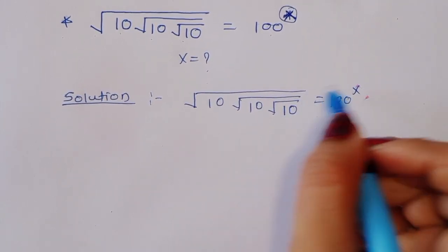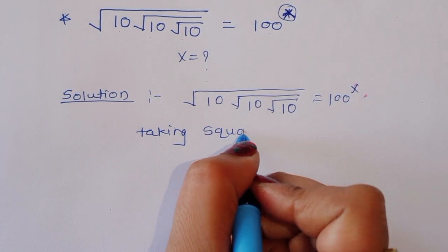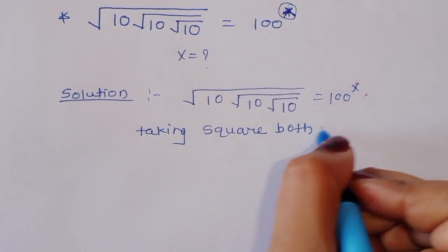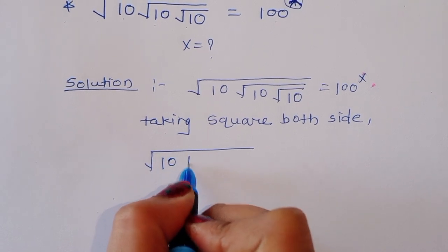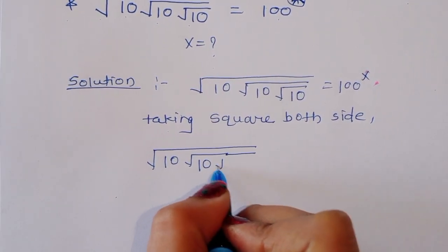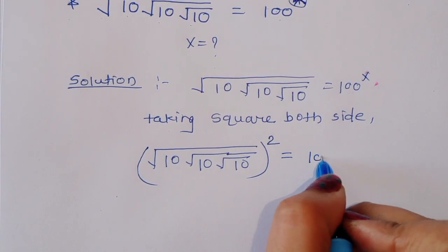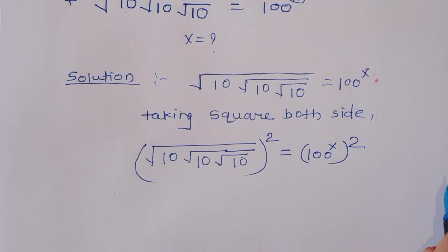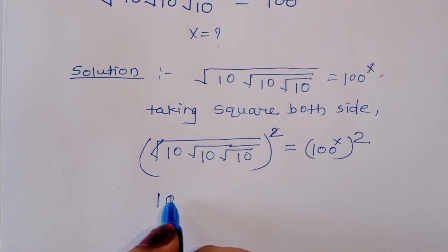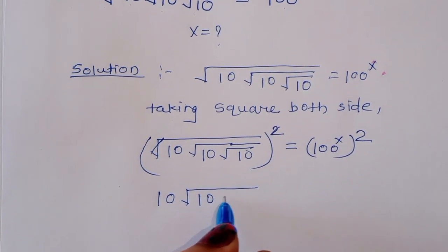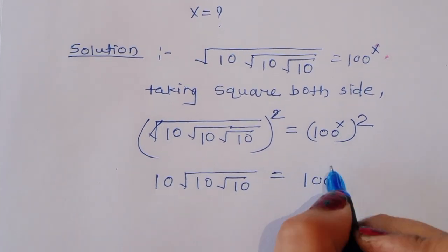Now we can take square. Taking square on both sides, we will get: square root of square root of 10, whole square is equal to 100 raised to x, squared. This gives us 10 times square root of 10 is equal to 100 raised to 2x.